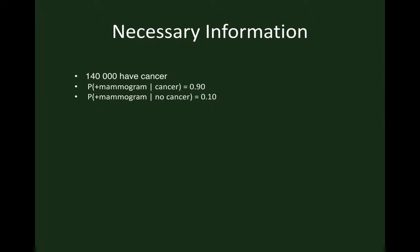First of all, let's take a look at the necessary information that we're given. We're told that 140,000 of the patients have cancer. And to me, what that means is this implies that 37,860,000 patients do not have cancer. And this is important to me because this will be the first branch of the tree I'm going to create. And here we have the other given probabilities: probability of a positive mammogram given cancer, probability of a positive mammogram given no cancer.